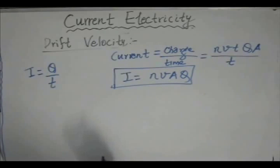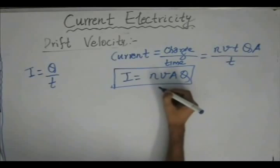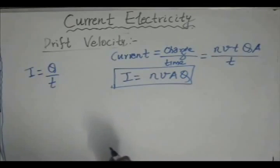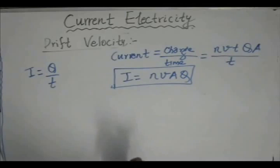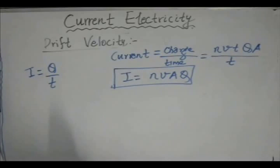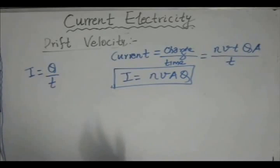The other thing which can be done is by increasing the drift velocity. That means if the drift velocity, the velocity with which the electron is drifting from one end to the other end, if that is increased, the amount of current will increase. In order to increase the drift velocity, we apply a higher potential, which gives a higher electric field. In the presence of a higher electric field, the charges would move at a very high drift velocity, giving rise to a very large amount of current in the conductor.